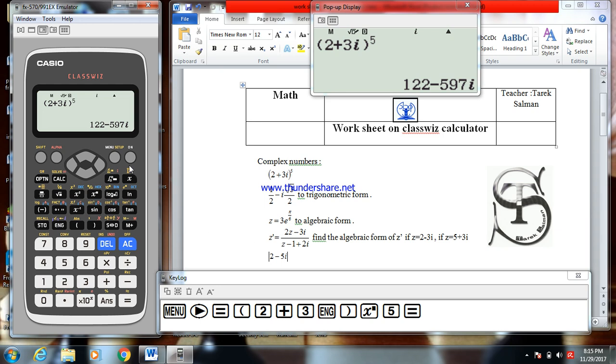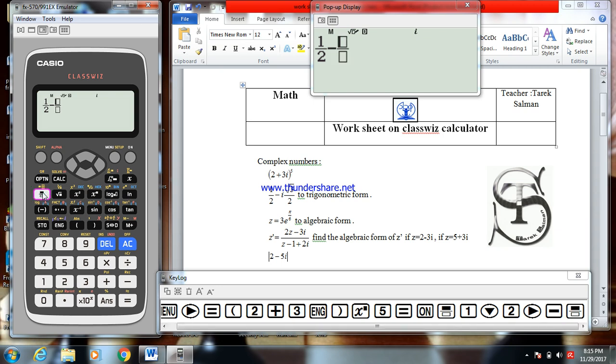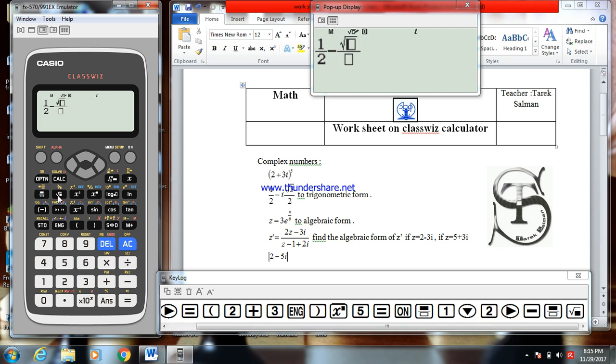Now, if I want to transform this complex number written in the algebraic form to the trigonometric form, how to do that? First, I have to write this one: 1 over 2 minus (√3 over 2)i.